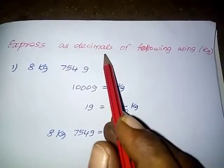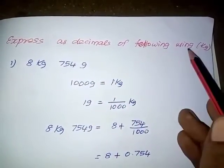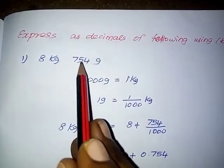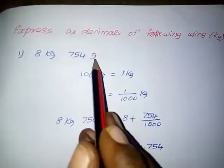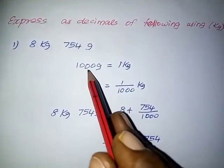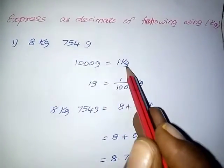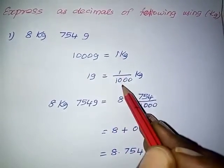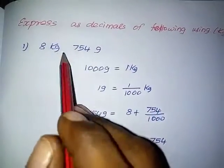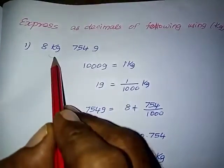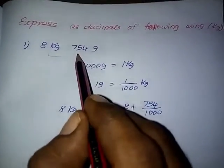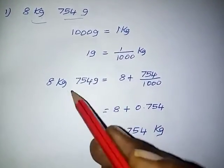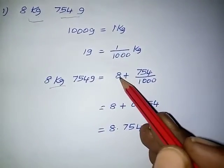Express as decimals the following using kilogram. Question number 1: 8 kilogram 754 gram. Already we know 1000 gram equal to 1 kg. From that, 1 gram equal to 1 by 1000 kg. From the question, 8 kg is the integral part and 754 is the decimal part. We have to write the integral part as it is.